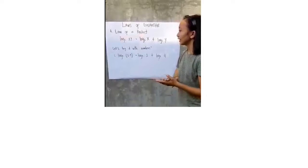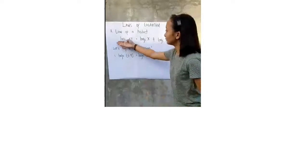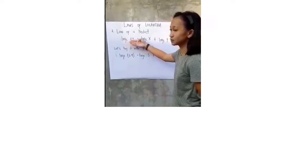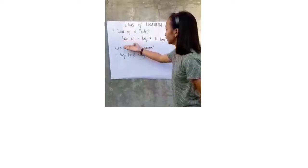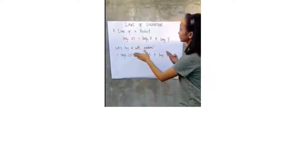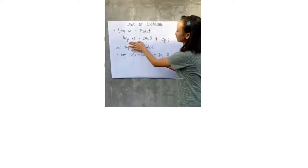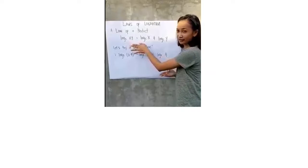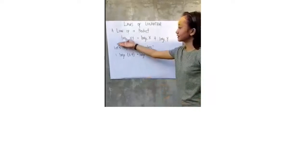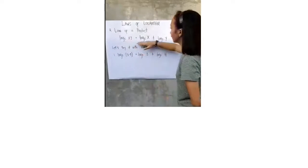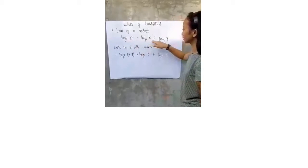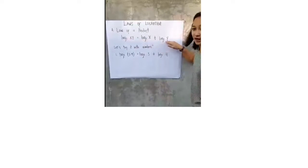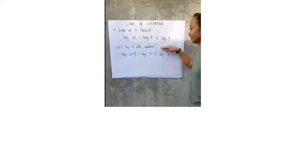In this equation, we have logarithm of x times y to the base c. We're just going to get the factors of product x and y because the bases are the same. So, logarithm of x to the base c plus logarithm of y to the base c.